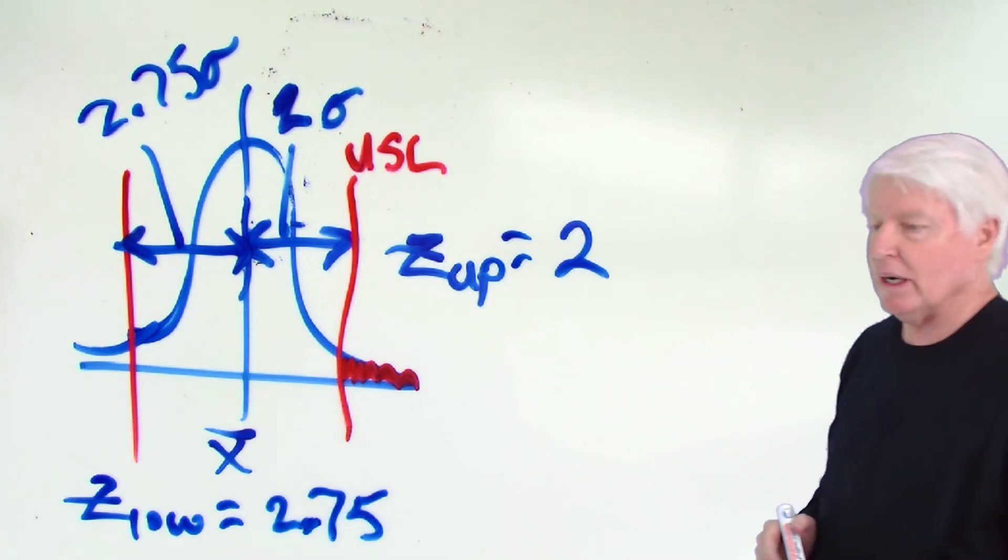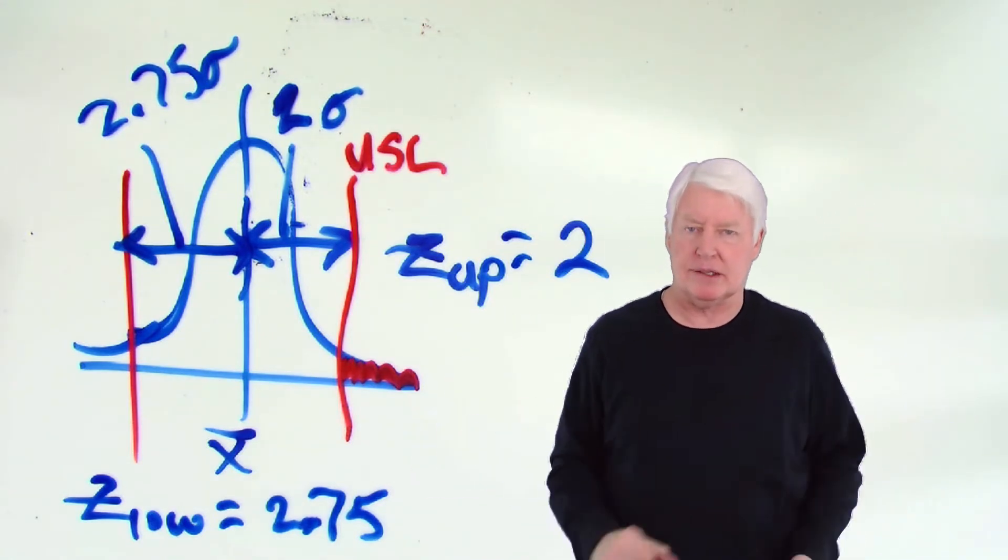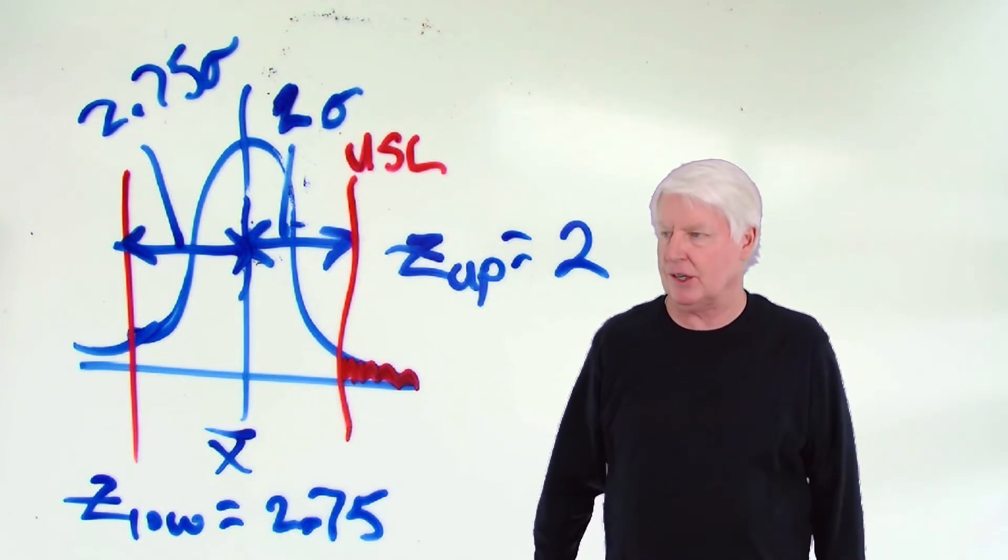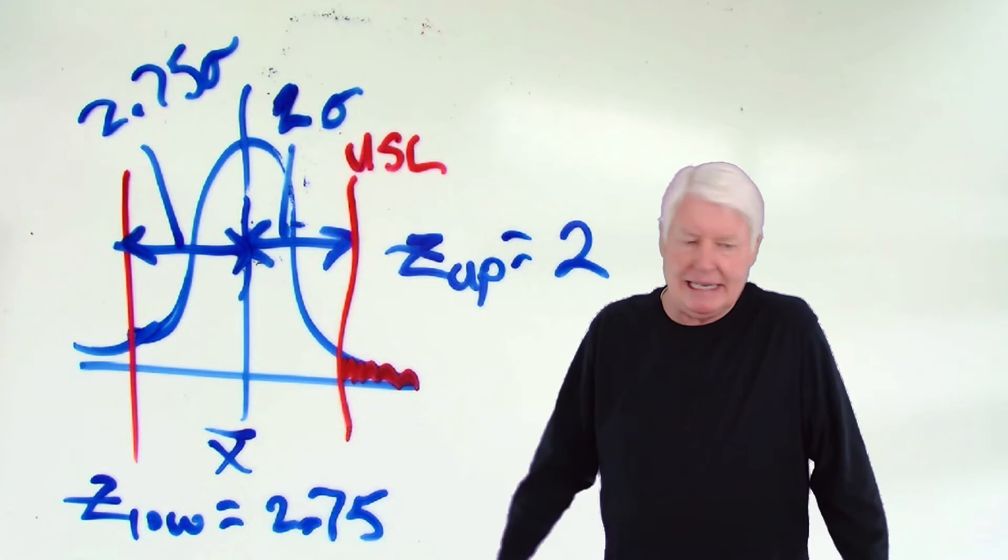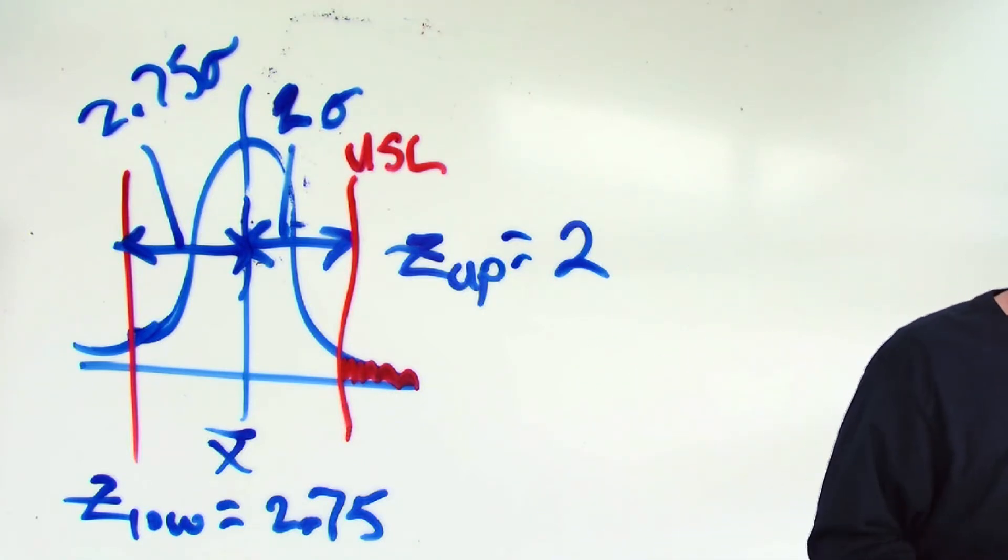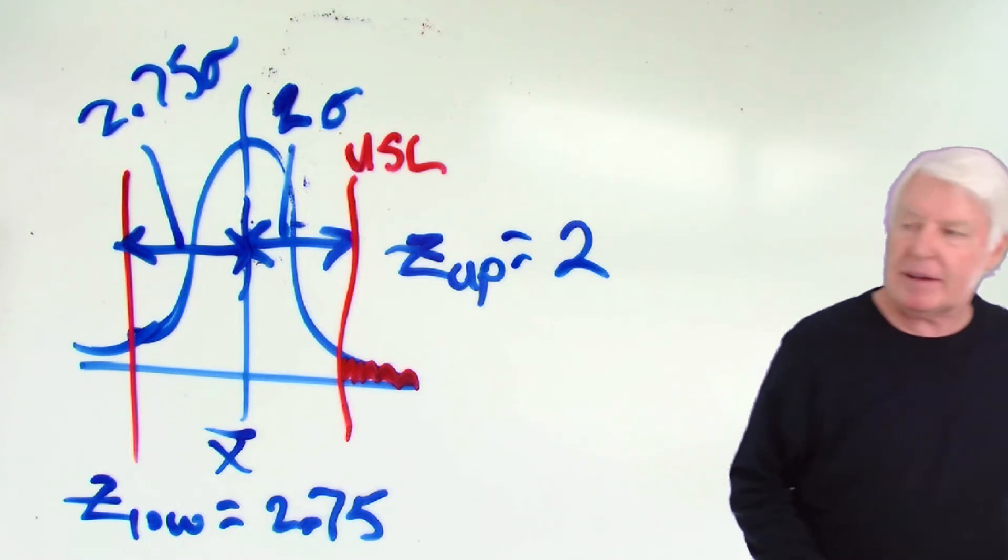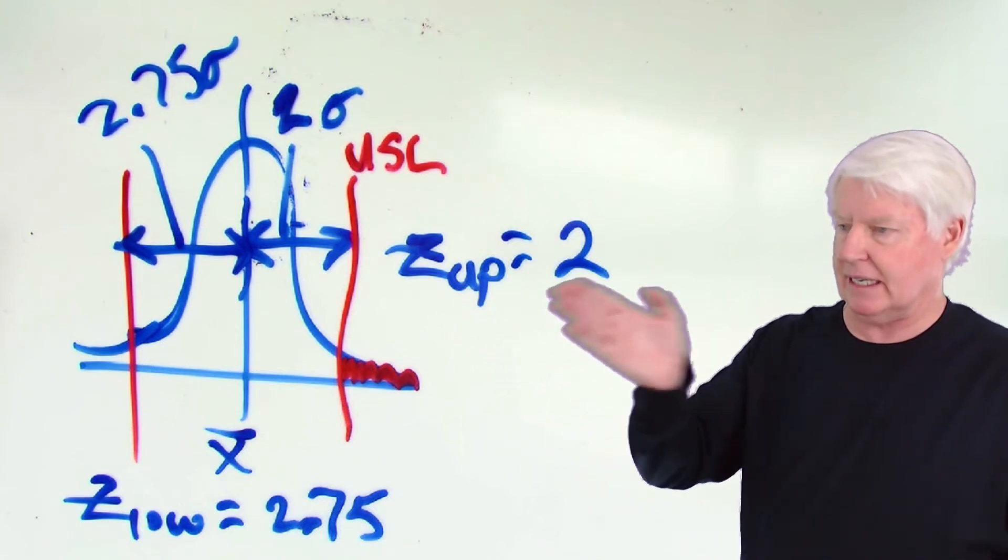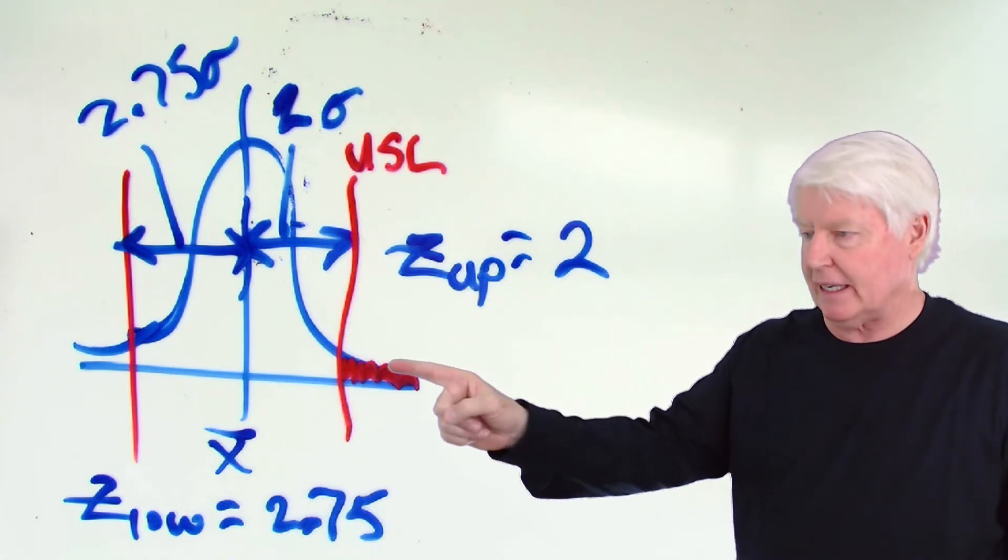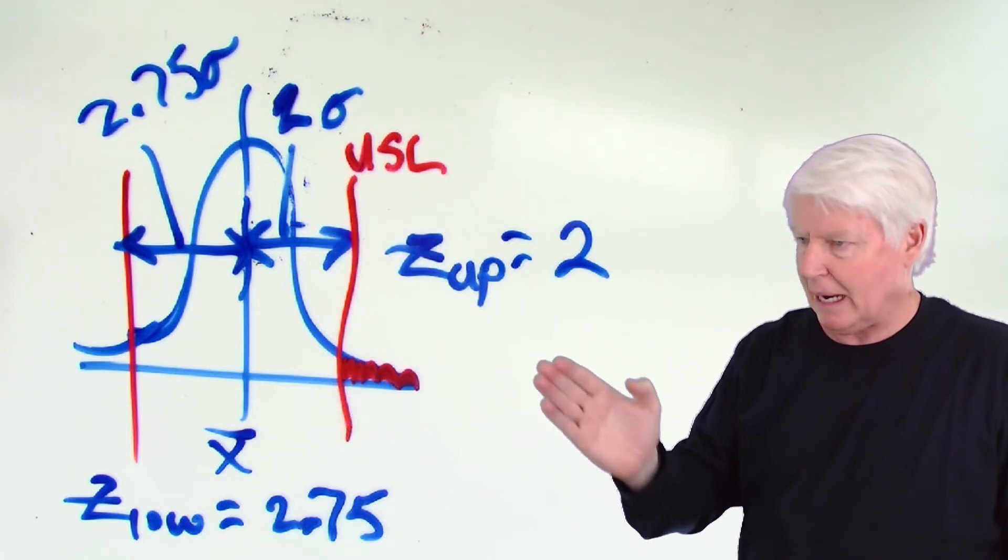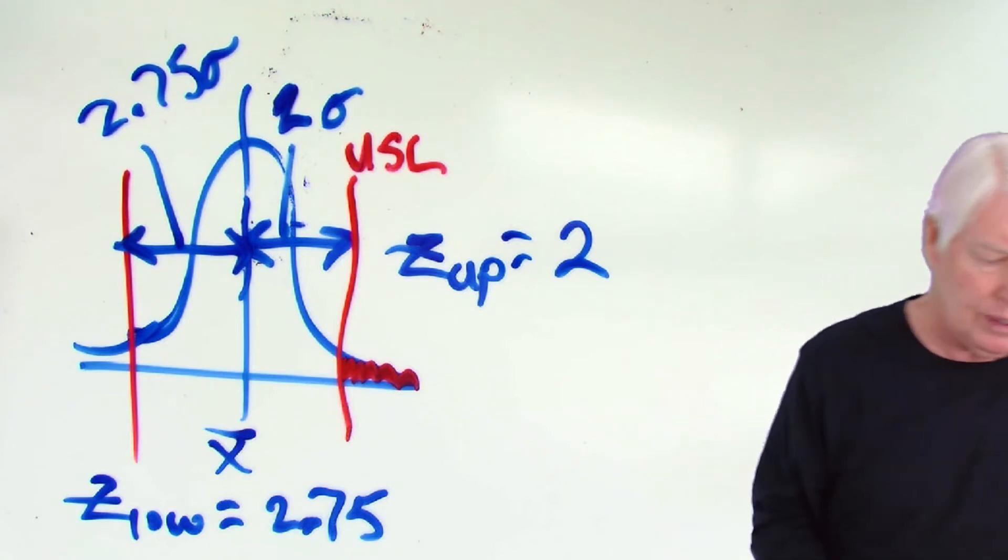Maybe z lower. That's the distance from the average to the lower spec limit. Notice we're always measuring from average. That's our datum, if you will, our reference for measurement. And let's say this is 2.75 sigmas. Very interesting. So what's z lower? z lower is how many sigmas? 2.75 sigmas. Then z lower is 2.75. And that is what z is. z is the number of sigmas. Sigma is used to measure distance. What do we measure distance from? The average.